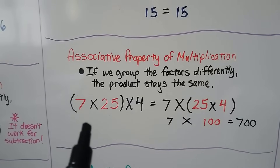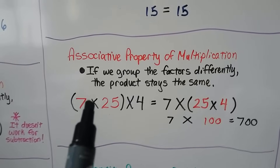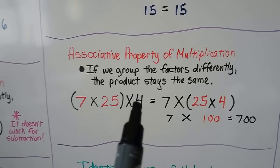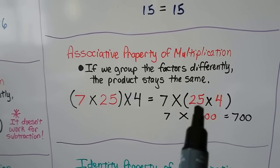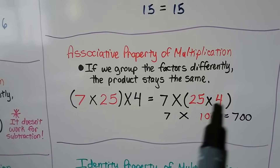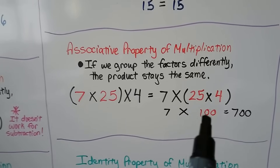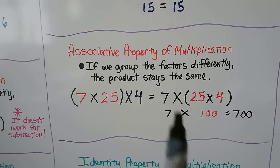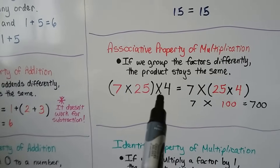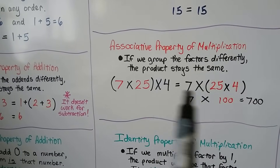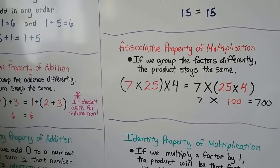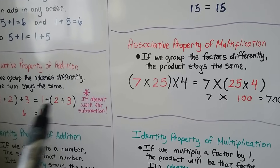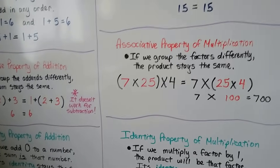What we can do is group numbers that are more compatible. It's not as easy to multiply 7 times 25 and get a product and then multiply by 4. It's a lot easier to multiply 25 times 4 because there are four quarters in a dollar — we can think of 100 and then multiply that by 7 to get 700. We could even do this mentally. The associative property of multiplication lets us group factors differently and get the same product — it's like a grouping property.